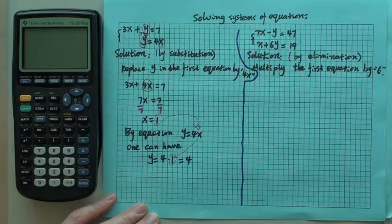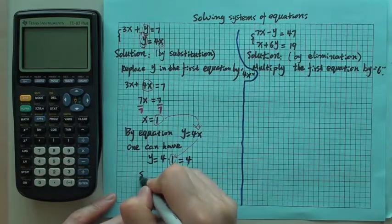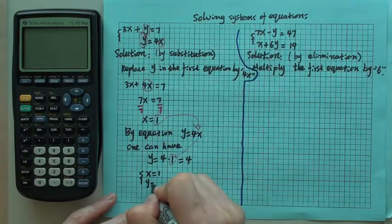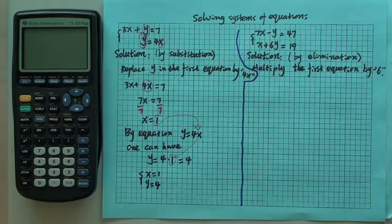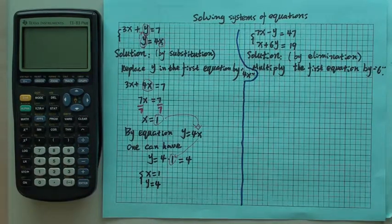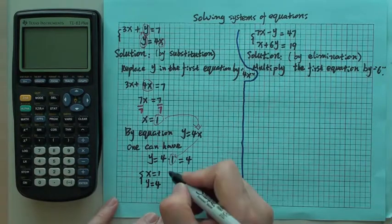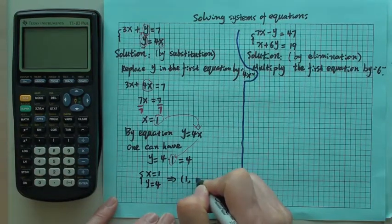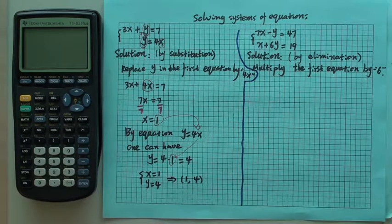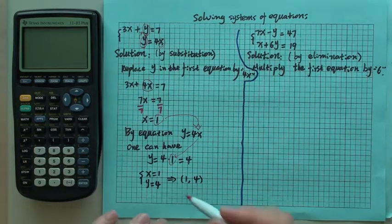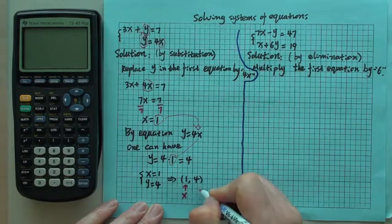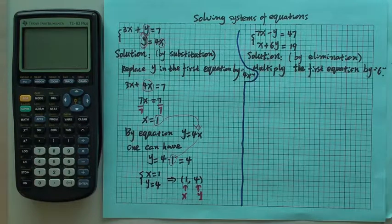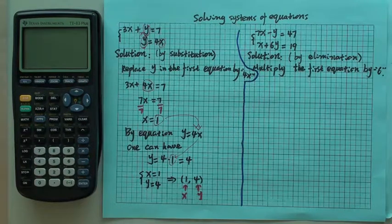Then you want to put the final solution like this. x equals 1, and y is 4. So we are done with the first one. You may also write it this way: (1, 4). Then this is for x, this is for y. And this is going to be a point in an xy coordinate plane.